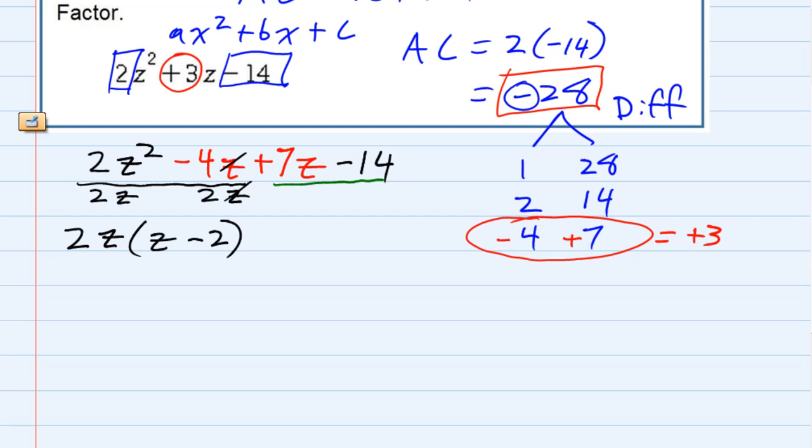Grouping the second group together, those two terms have a positive 7 in common. So when I factor that out, I'm left with just the z in the first term because the 7s cancel. And in the second term, I'm left again with a minus 2.